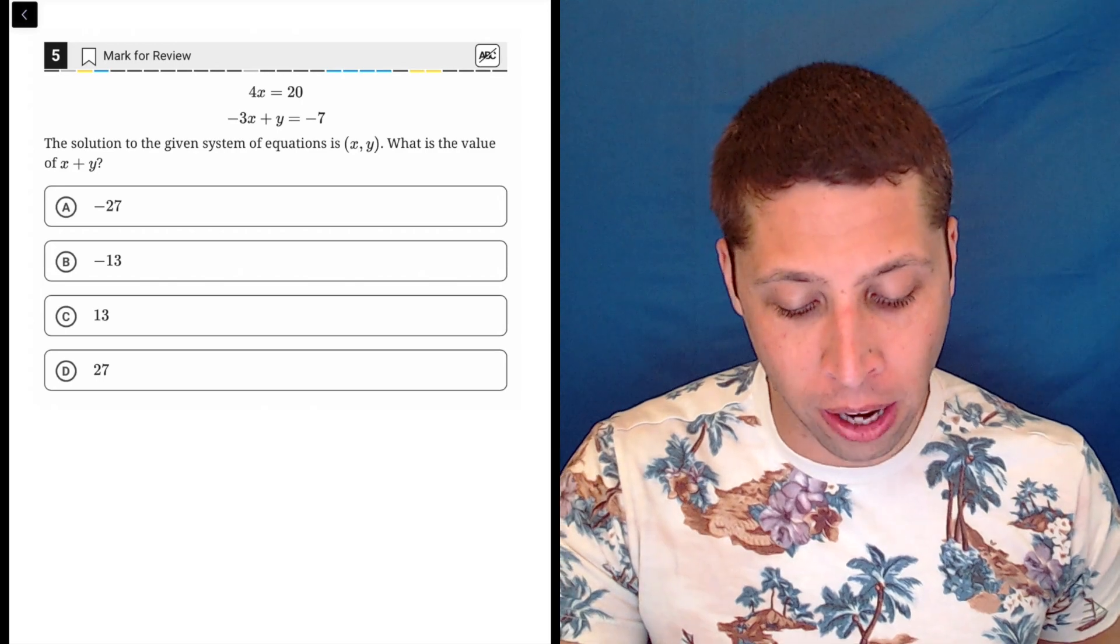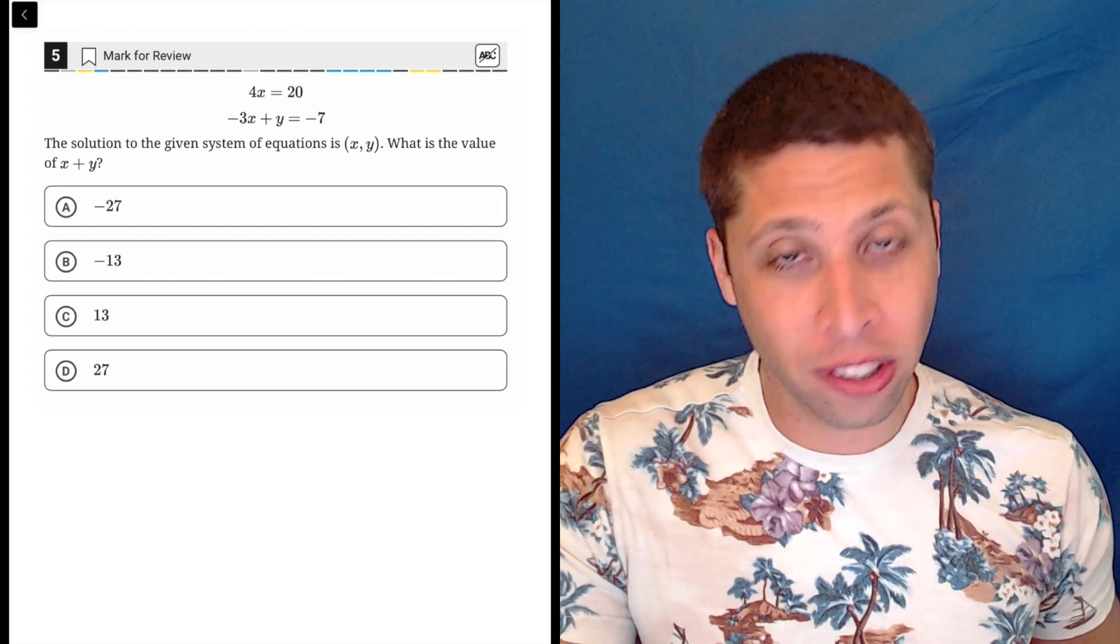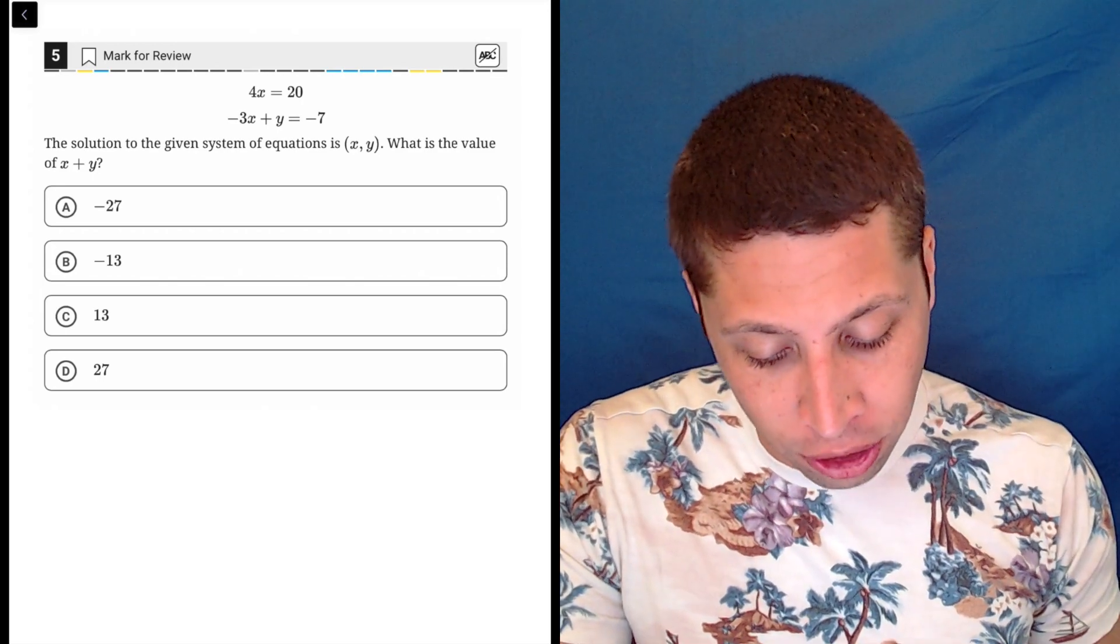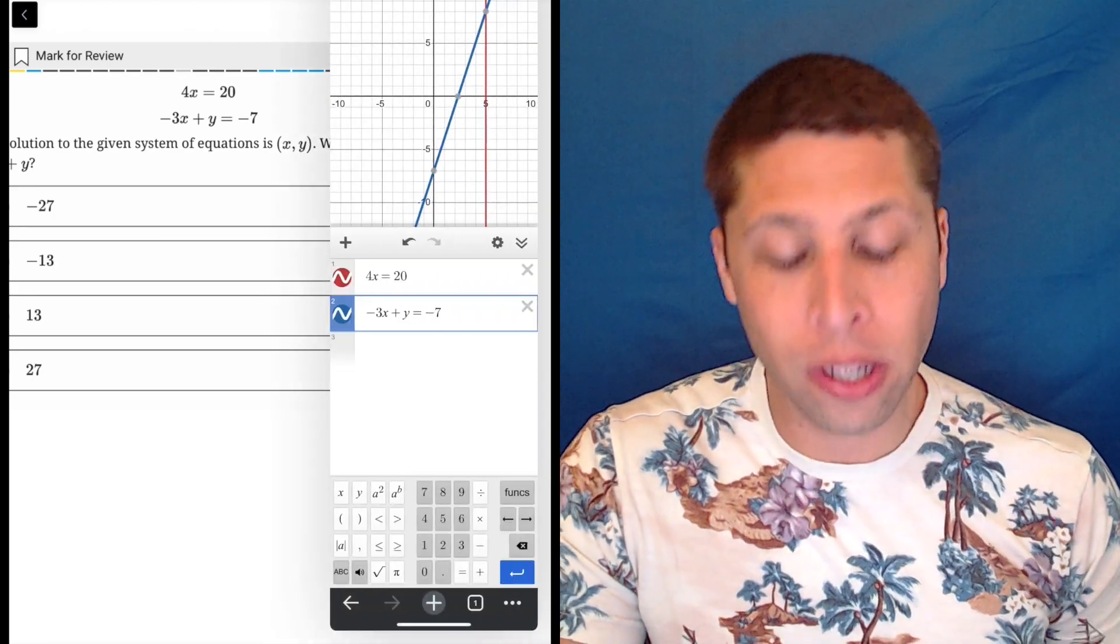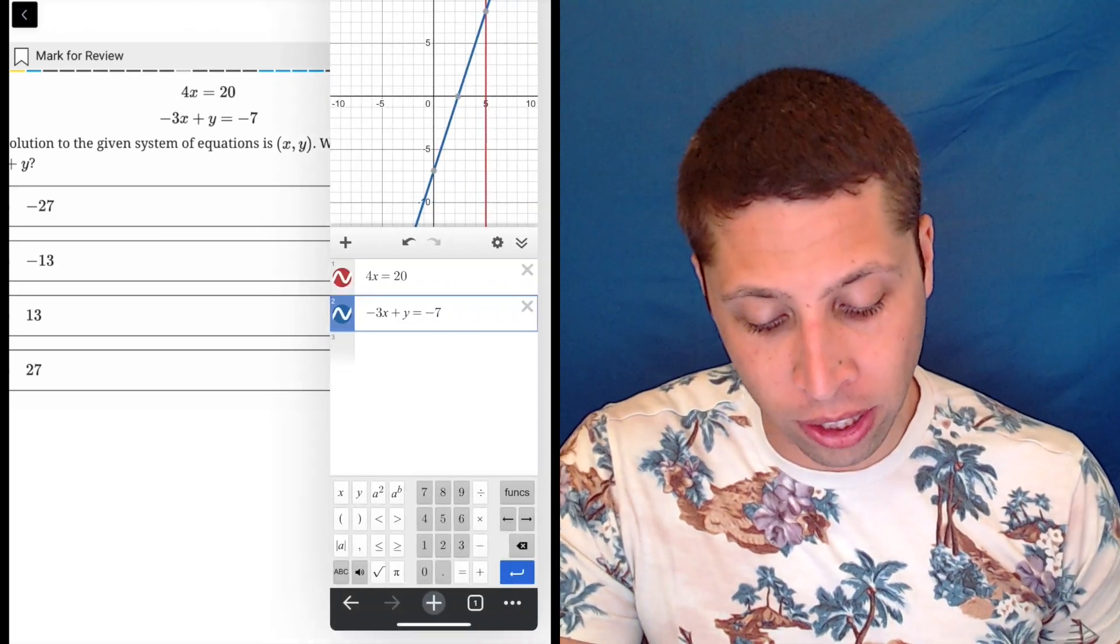There's really no reason to do the algebra here. I think it's not that hard, but it doesn't take much longer to just enter these two equations into Desmos, and you can see the point of intersection instantly.